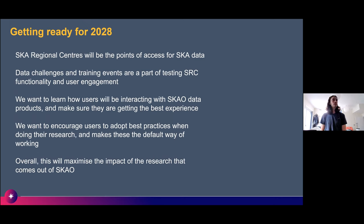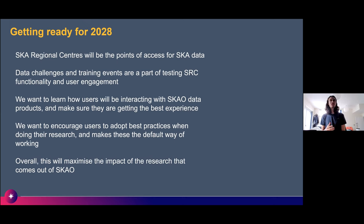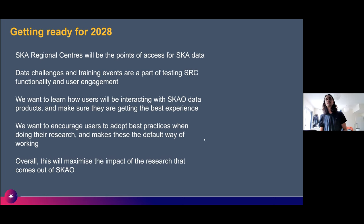In summary: SKA Regional Centers will be the point of access for SKA data. 2028 is the current date for when SKA comes online. We're using data challenges and training events to test SRC functionality and user engagement. We want to learn how users interact with data products, ensure they get the best experience, and encourage users to adopt best practices as the default way of working — maximizing the research impact of SKA, as with the Sloan Digital Sky Survey and Hubble.